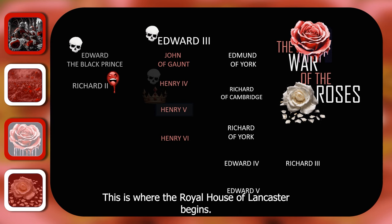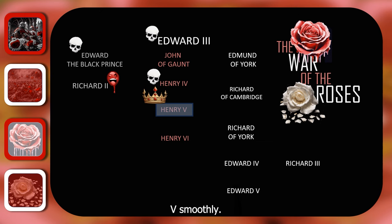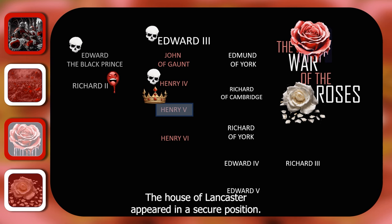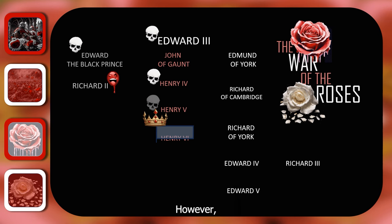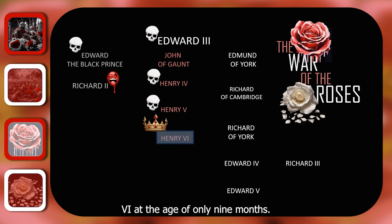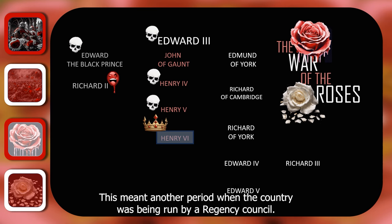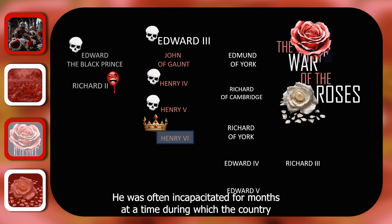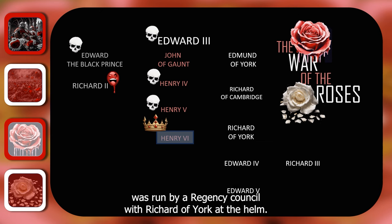Henry IV was able to pass the throne on to his son Henry V smoothly. Henry V has been glorified as one of the best medieval kings due to his victory at the Battle of Agincourt, and the House of Lancaster appeared in a secure position. However, when Henry V died, he left the throne to his son Henry VI at the age of only nine months. This meant another period when the country was being run by a regency council. Worse still, when Henry VI did come of age, he suffered from a mental illness that resulted in bouts of madness, and he was often incapacitated for months at a time, during which the country was run by a regency council with Richard of York at the helm.